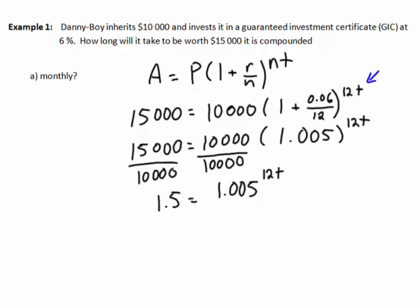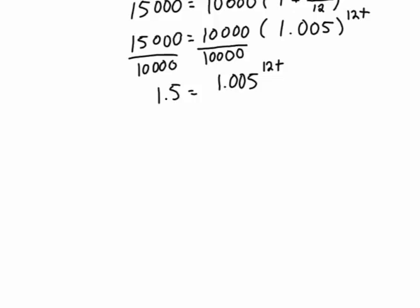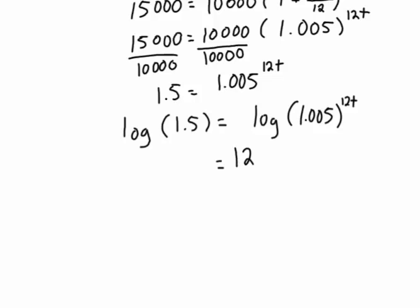This is where we now have to use our knowledge of exponential and logarithmic functions to solve for t. If we want to get t by itself here, the best thing we could do is log both sides. So we'll get log of 1.5 is equal to log of 1.005 to the 12t. The reason we want to do that is now the 12t will come in front, and we get 12t times log of 1.005 equals log of 1.5.